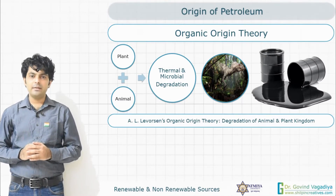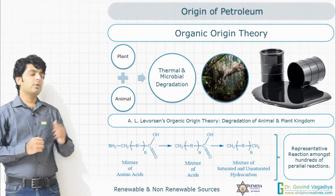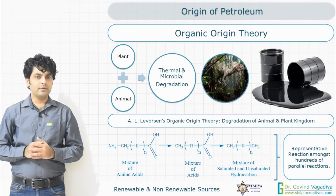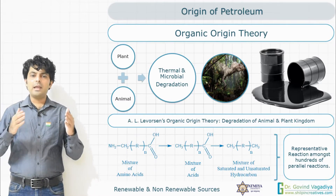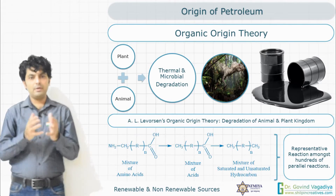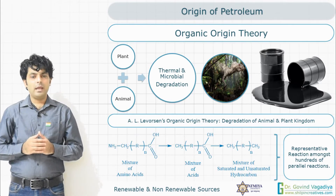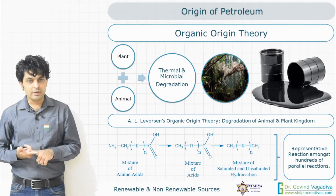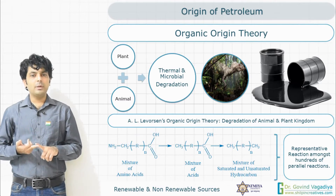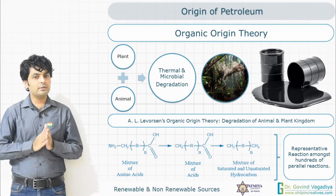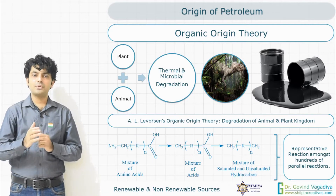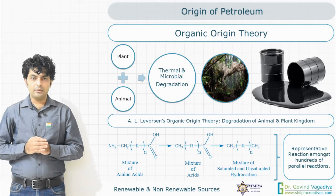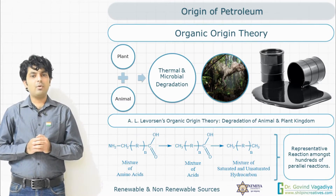Another theory of the origin of petroleum was given by Dr. A.L. Levorsen, a scientist, and is known as the organic origin theory. Levorsen discussed that when plants and animals were buried underneath the earth and subjected to high pressure, high temperature, and microbial degradation, they were converted into petroleum. This is called the organic origin theory because Levorsen focused on organic substances as the precursor of petroleum.